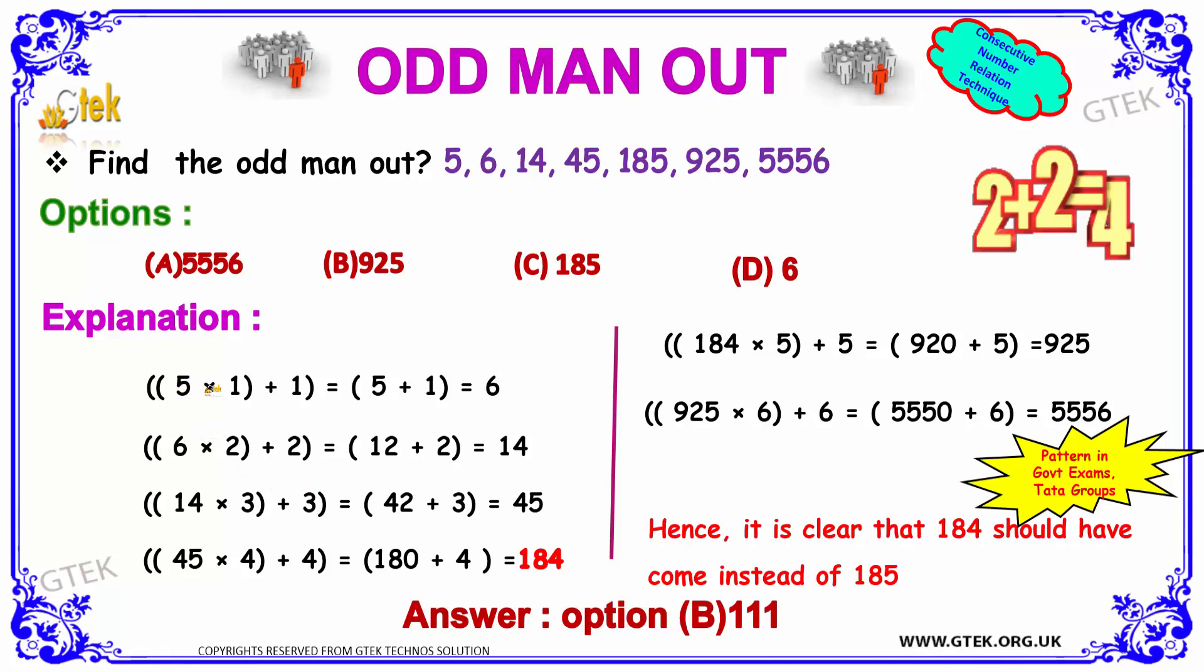So 5 into 1 plus 1, it's 5 plus 1 is equal to 6. And 6 into 2, that's 12 plus 2 is equal to 14. 14 into 3 plus 3, you got 45. 45 into 4 plus 4, it's 184. The same logic applies until here. So here is the problem: it's 184 but it's given 185. So the option is 185.